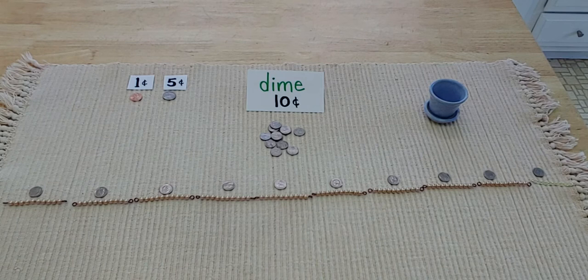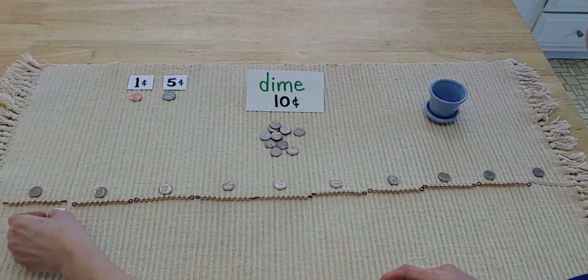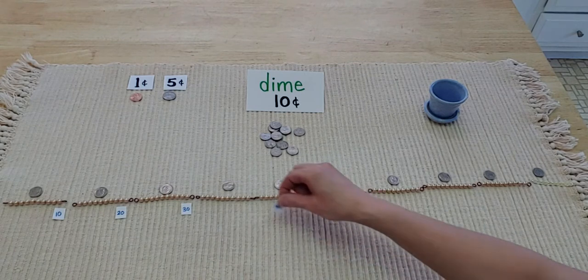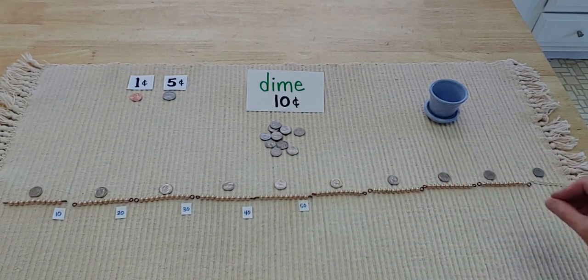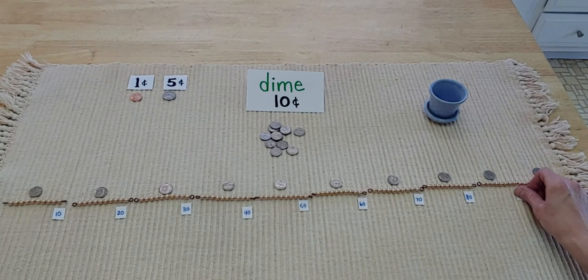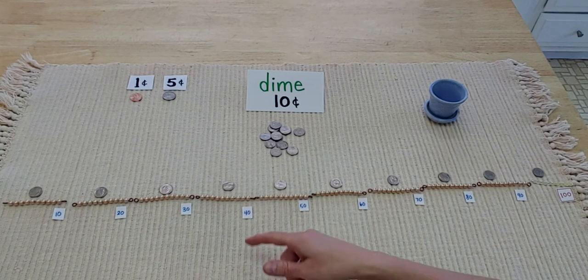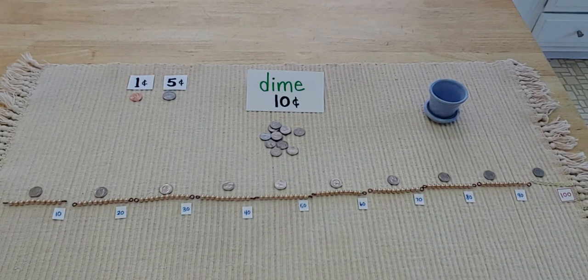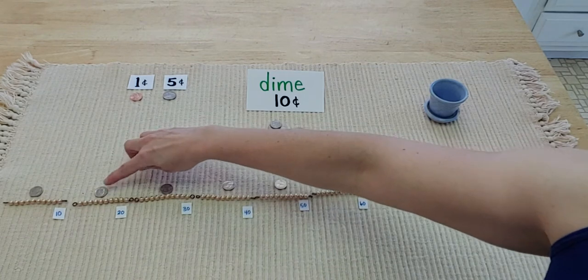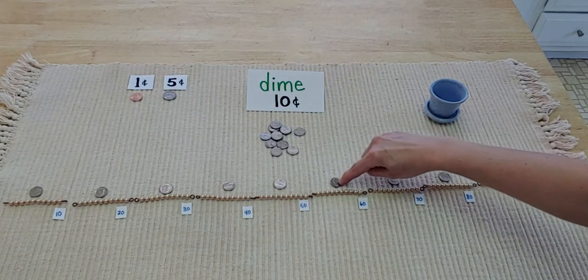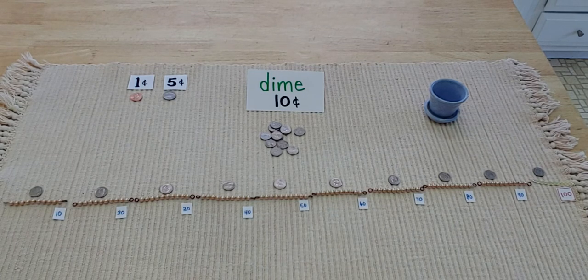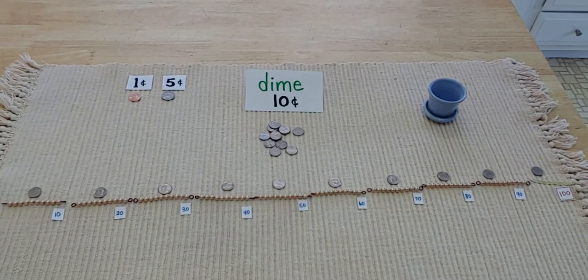We can use these to help us count: 10, 20, 30, 40, 50, 60, 70, 80, 90, 100. I have 100 cents altogether just using these dimes.